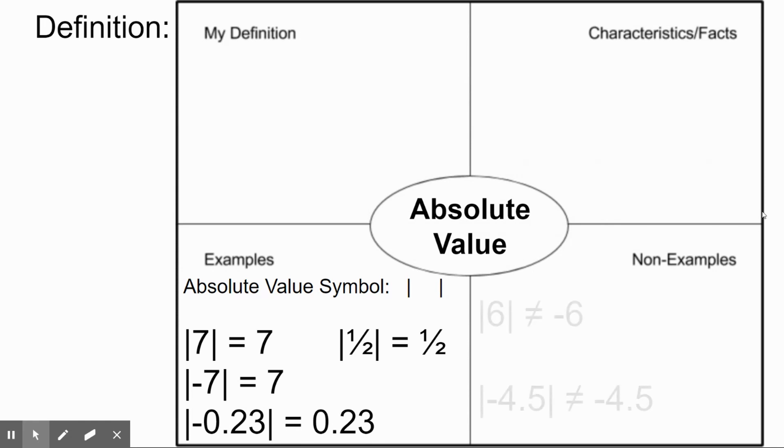So the more observant of you may already see some sort of pattern here. Let's look at the non-examples. We've only got two really here. First of all, we're going to say that the absolute value of six is not equal, that's what that equal sign with a slash means, not equal to negative six.